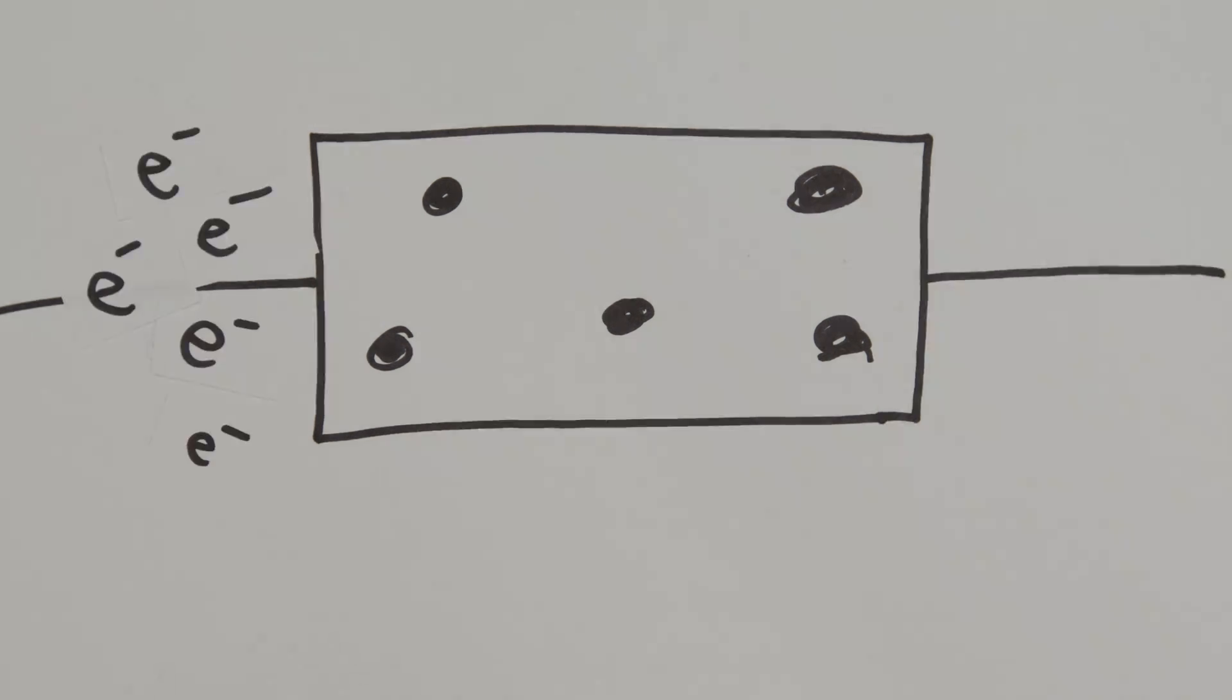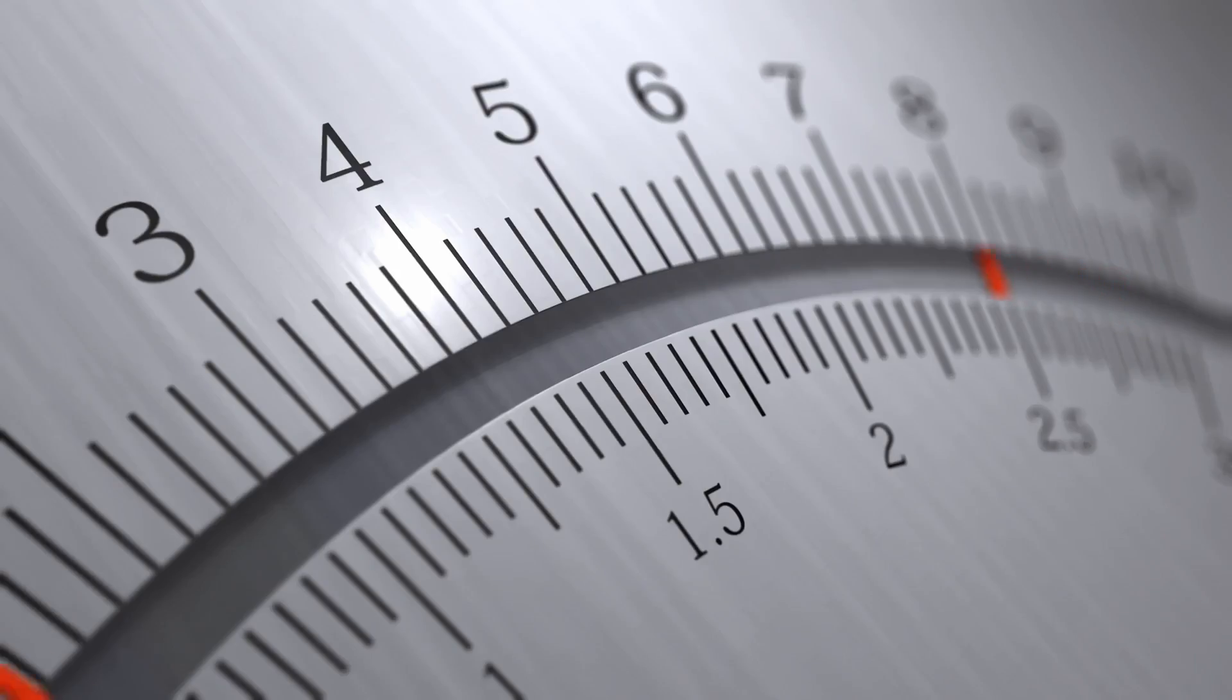This creates a backlog of electrons at one end, which causes imbalance between the two ends of the resistor. And the more electrons we slow down, the larger this backlog becomes. This causes a voltage across the resistor to appear.